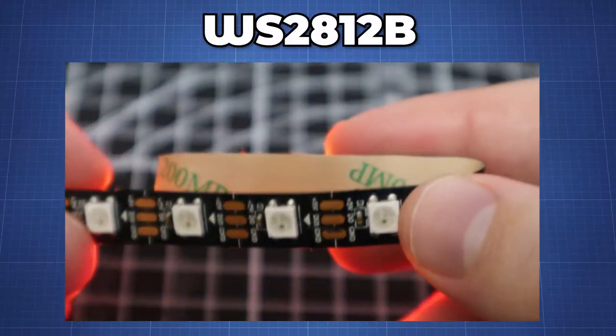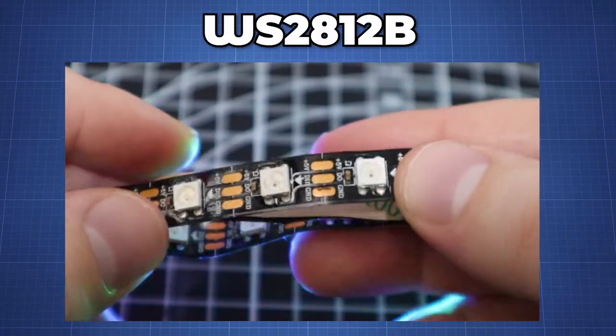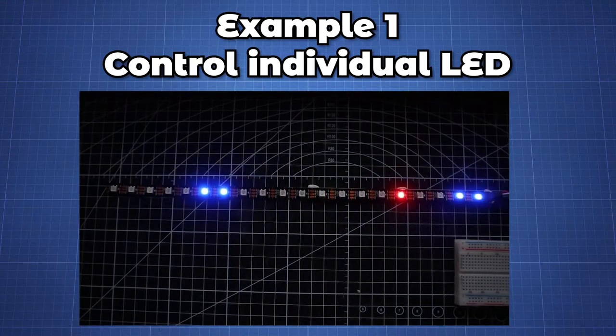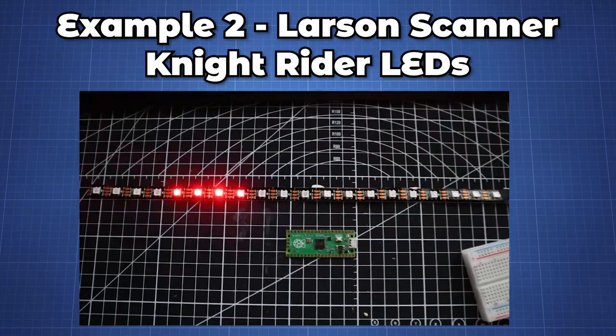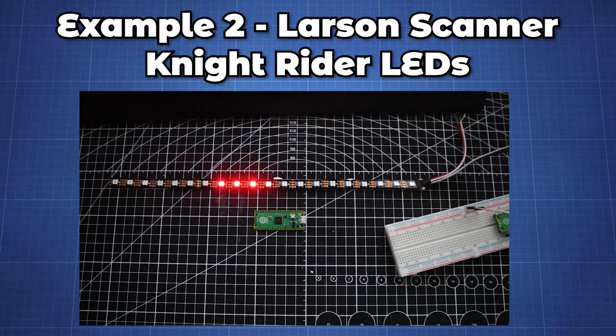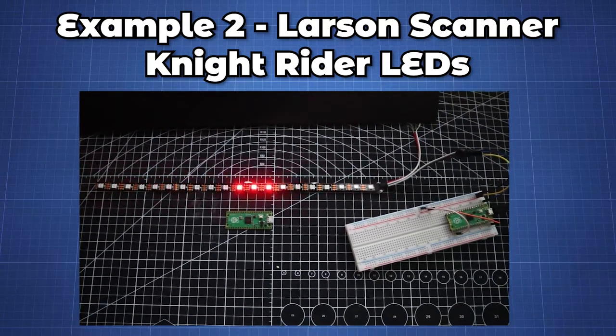We are going to use the popular WS2812B LED type. We will learn how to program the color of each LED individually, making a simple Larsen scanner or mostly known as Knight Rider LEDs.